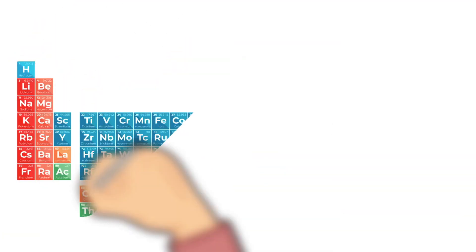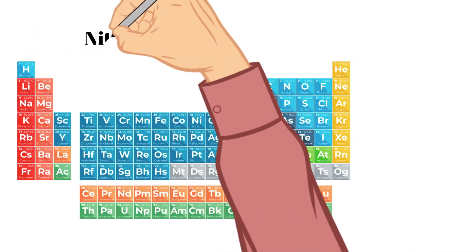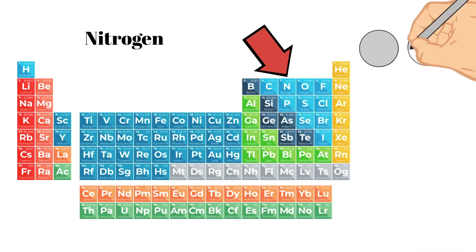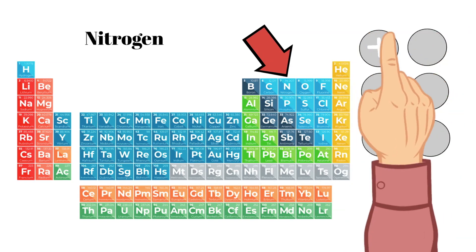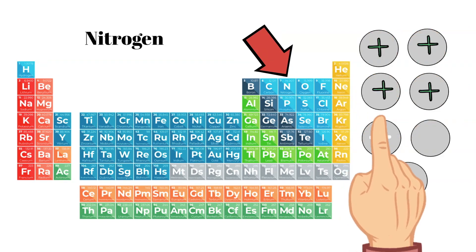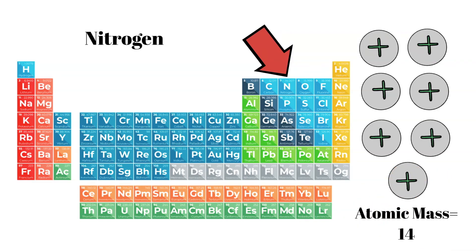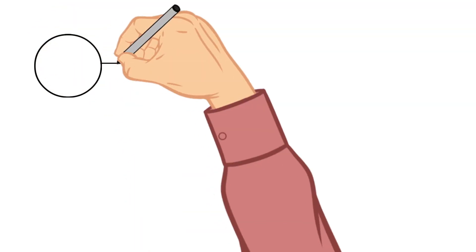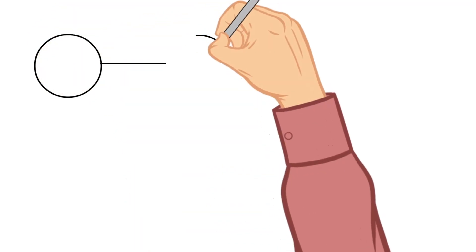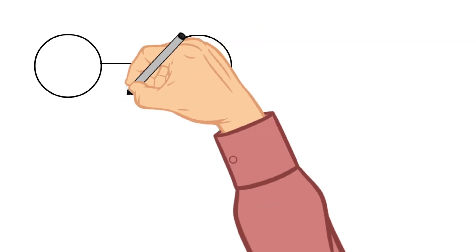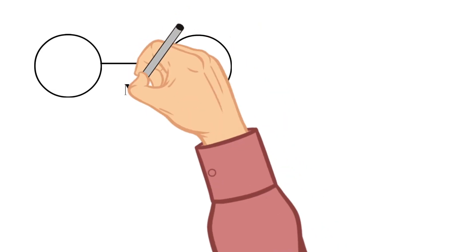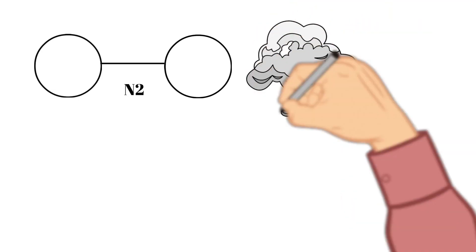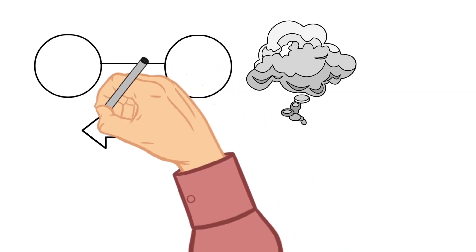The next element we're going to talk about is nitrogen. Nitrogen has an atomic number of seven, which means there are seven protons in the nucleus, and it has an atomic mass of about 14. Nitrogen forms what's called a diatomic molecule, which means there are two nitrogen atoms per molecule in gas form — so nitrogen gas is N2. When it is in a gas form it does not typically react with other elements or compounds.